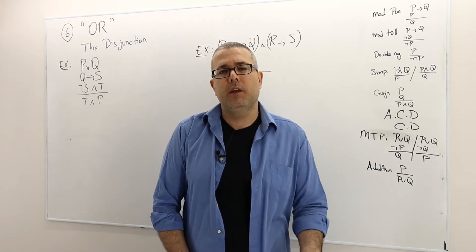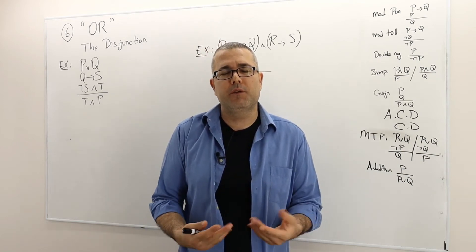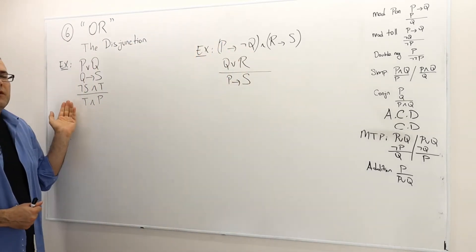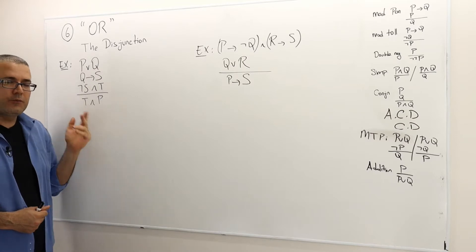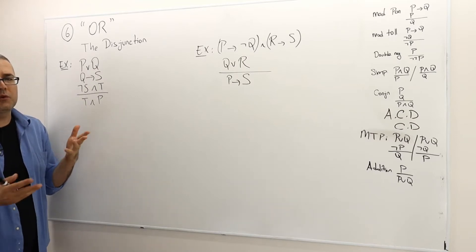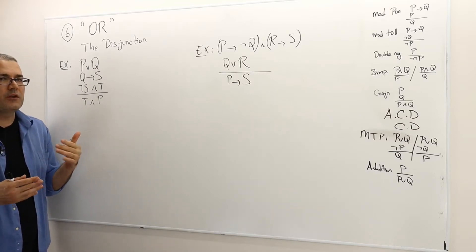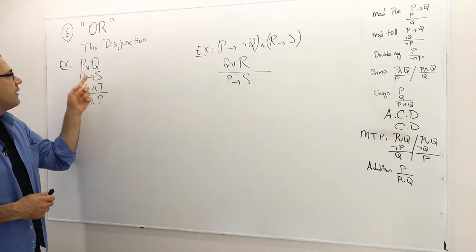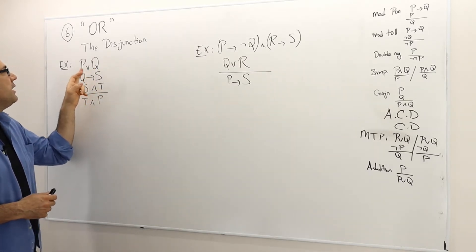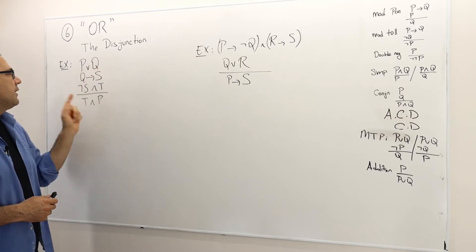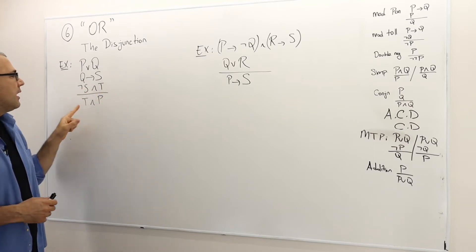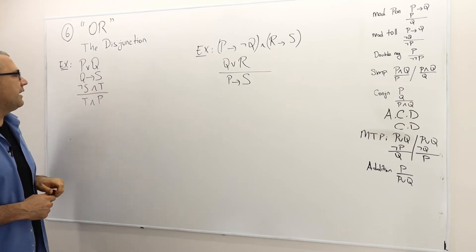So now here I have two examples and both of those examples are asking me to prove those arguments or show that these arguments are valid. The first argument has three premises: P or Q, then Q implies S, and then not S and T. Therefore the conclusion is T and P.